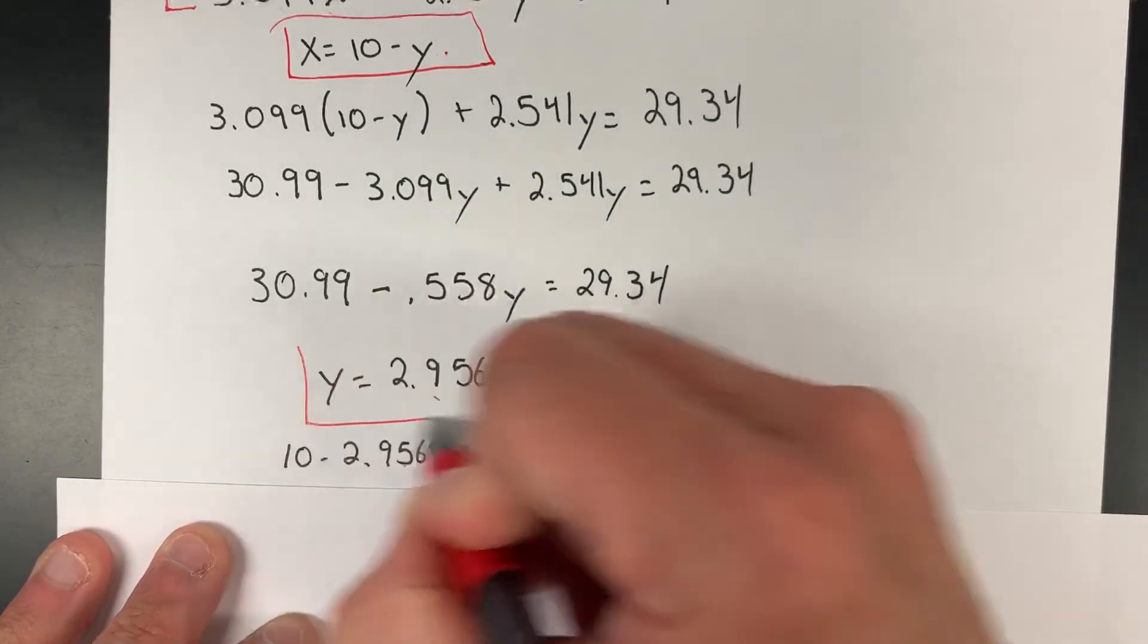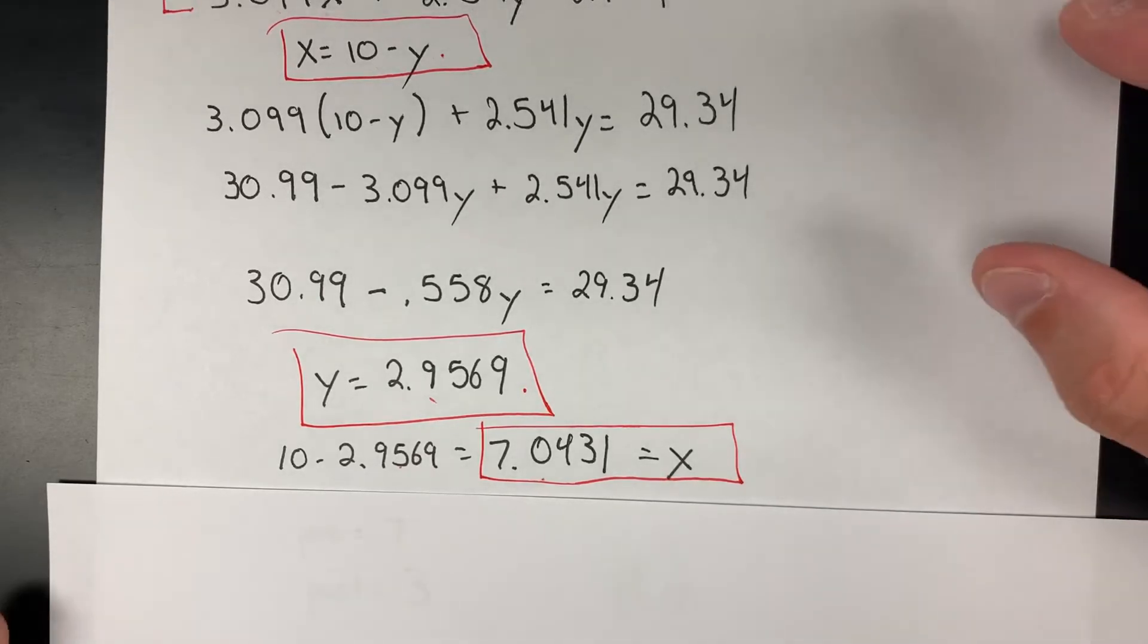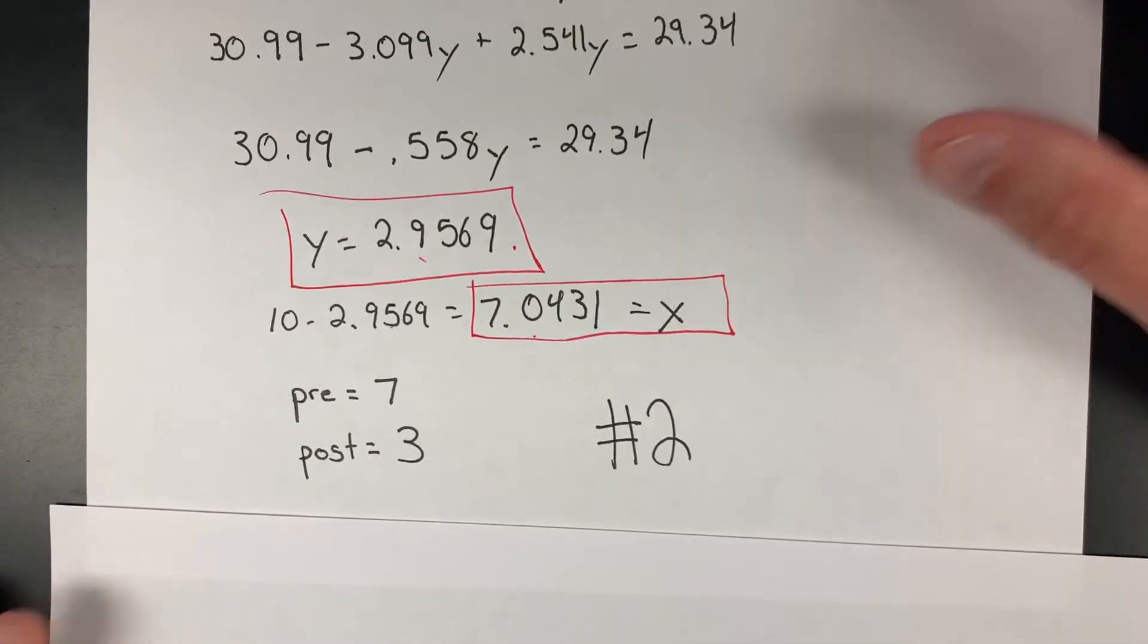This should be a little peculiar—we have two different decimals. Whether you're period 1, 2, 7, 8, or 9, there's a good chance you're going to come up with decimals. The data is not perfect. So what I would do is round to the nearest whole number.